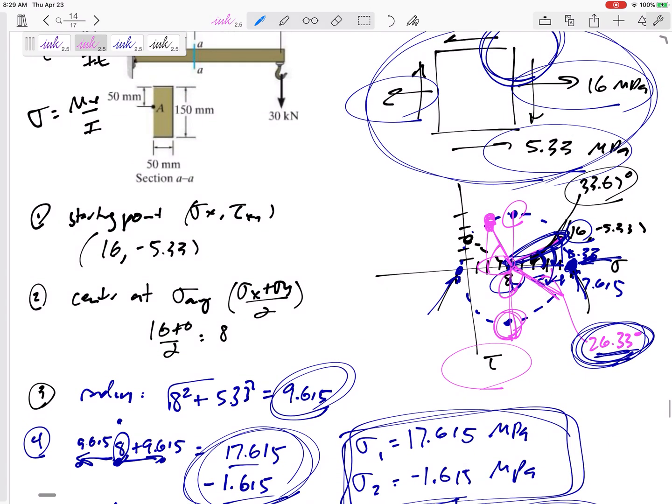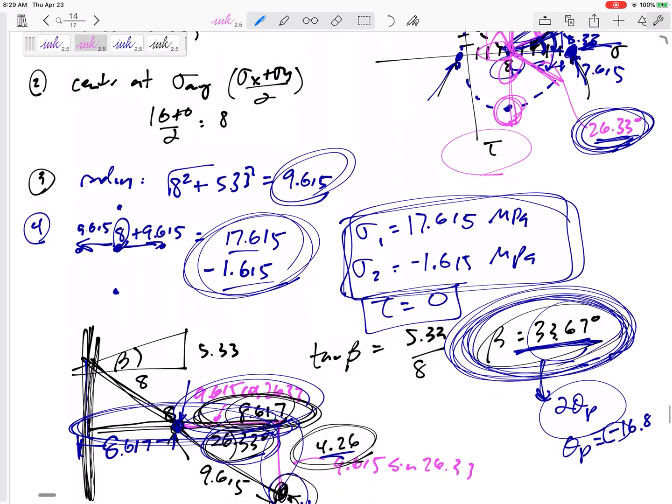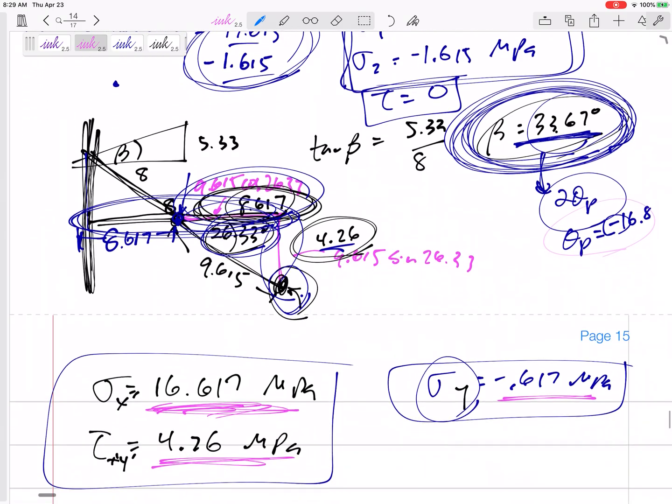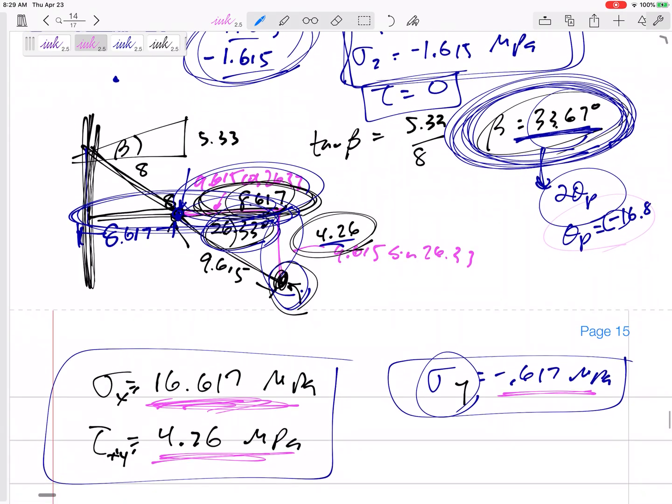And then also theta s is the angle to horizontal. This would be 2 theta s right here. But it should be 45 degrees from theta P as well. So those are three things I can ask you.